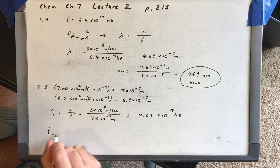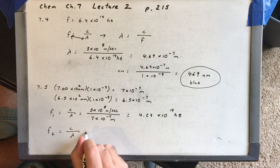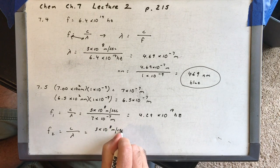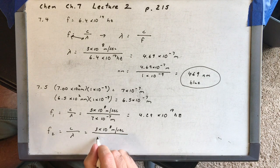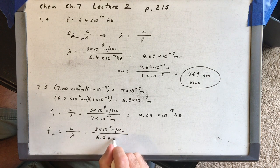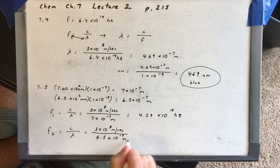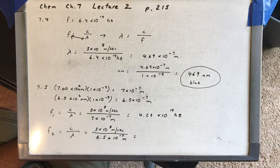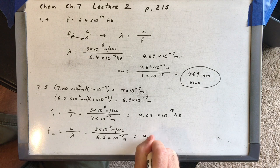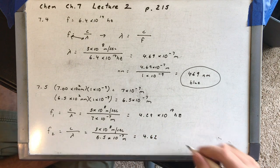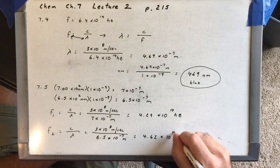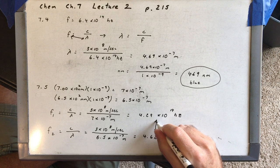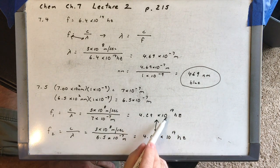Our second frequency, again, is speed of light over wavelength: 3 times 10 to the eighth divided by 6.5 times 10 to the minus 7 meters. You put that in your calculator and you get 4.62 times 10 to the 14th hertz. So that's our frequency range from 4.29 times 10 to the 14th hertz to 4.62 times 10 to the 14th hertz.